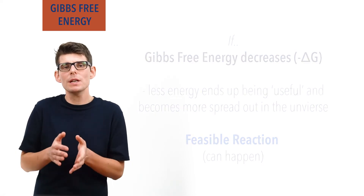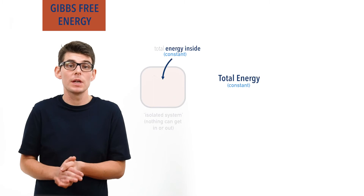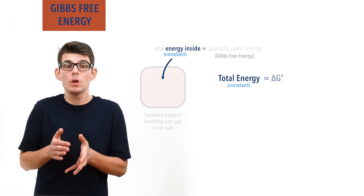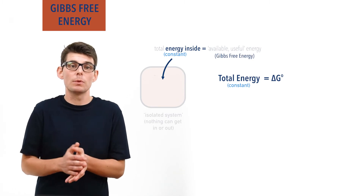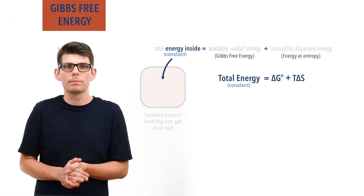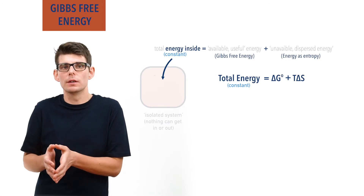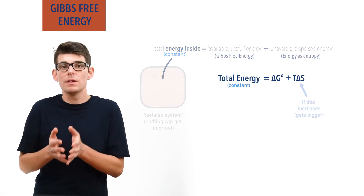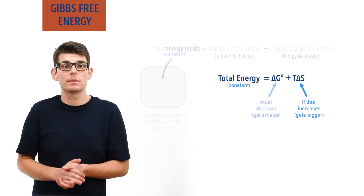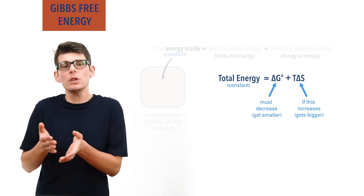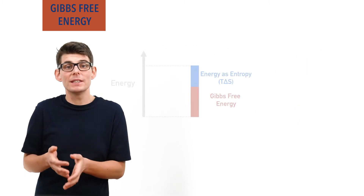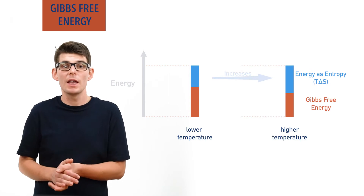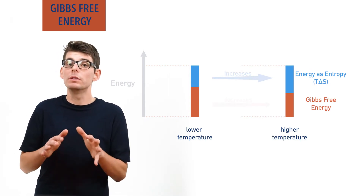The total amount of energy in an isolated system is constant, meaning total energy always equals available useful energy plus unavailable dispersed energy (entropy). Whenever a reaction occurs, if dispersed energy increases, the useful energy must decrease. Entropy changes with temperature, meaning the amount of energy in the system as entropy will increase with temperature, and the Gibbs free energy will decrease.